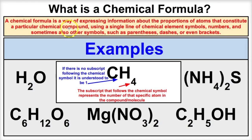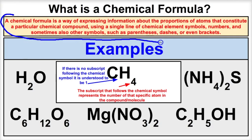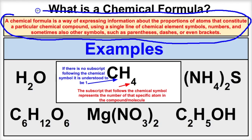numbers, and sometimes other symbols as well — parentheses, dashes, or even brackets. Basically, a chemical formula tells you how many of each atom there are in a given compound.